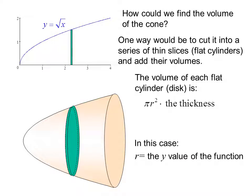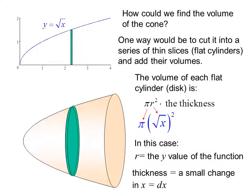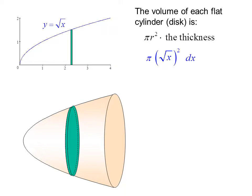In this case, r equals the y value of the function. So we have pi times radical x squared. The thickness is a small change in x or dx. If we add the volumes, we get the integral from 0 to 4 of pi times radical x squared dx.